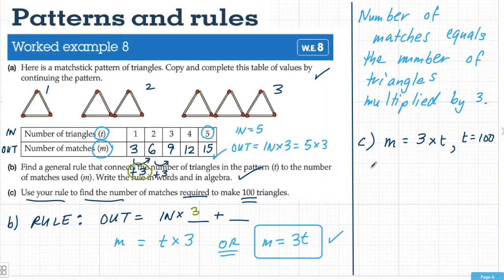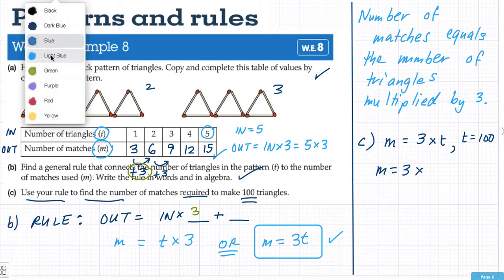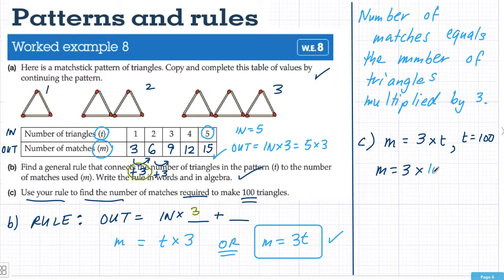So it's a substitution problem. We have M equals three times T. Remember we don't write T. We actually write in the value for T which is 100. Three times 100 is 300. So we would have 300 matches to make 100 triangles.